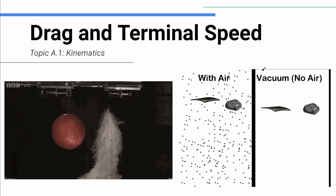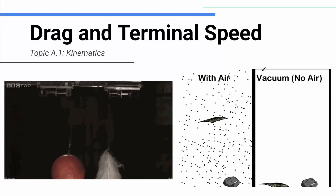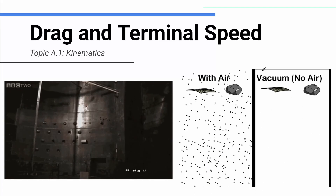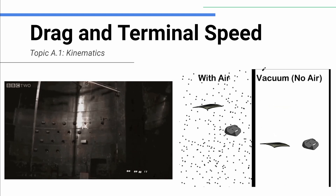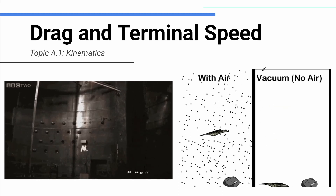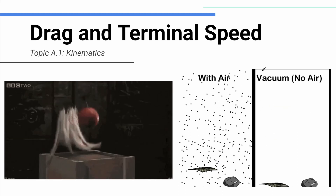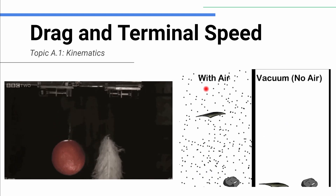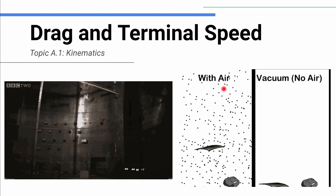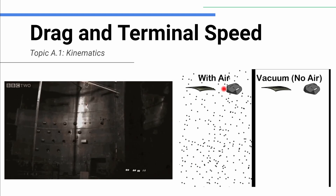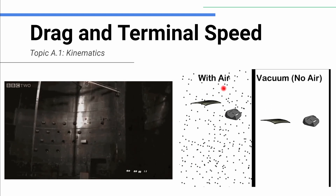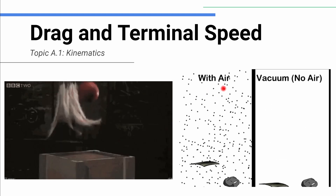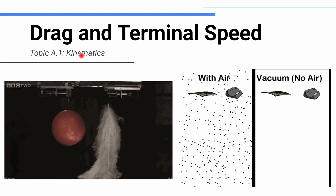Hello! In this video we are talking about drag and terminal speed, a fun thing that happens when an object moves through the air, especially like falling. Here's what we're used to in everyday life. Drop a rock, drop a piece of paper. The piece of paper takes way longer to fall. Why?